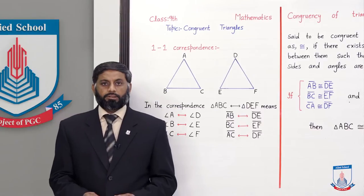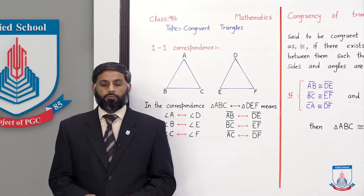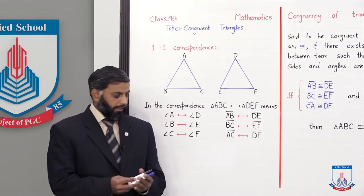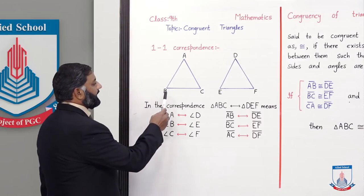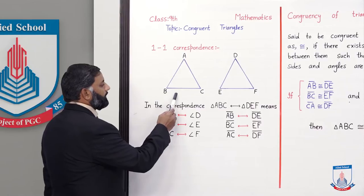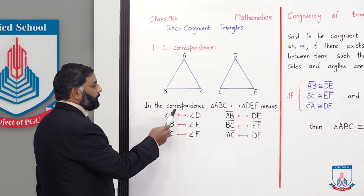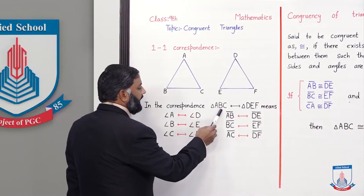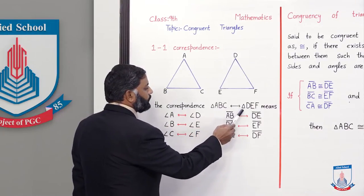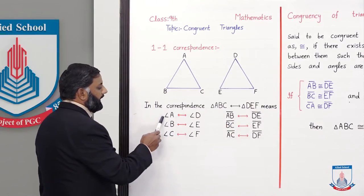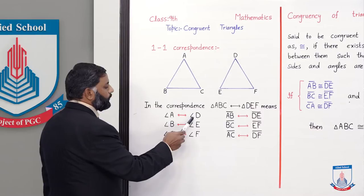Students, congruency of triangles samajhne se pehle, one to one correspondence samajhna zaroori hai. So, one to one correspondence samajhte hain. Yahaan pe maine board pe doh triangles draw ki hain: triangle ABC aur triangle DEF. Is correspondence mein triangle ABC corresponds to triangle DEF means angle A corresponds to angle D.